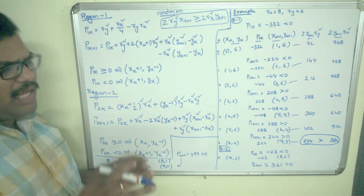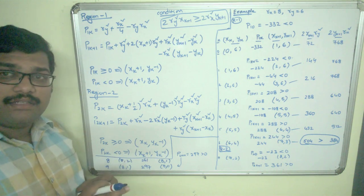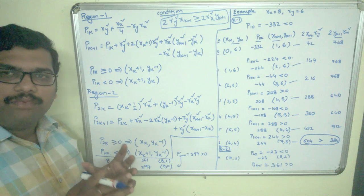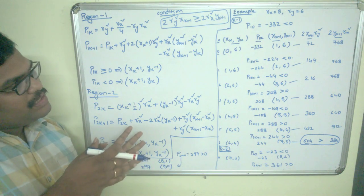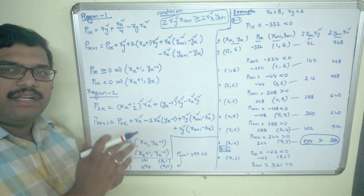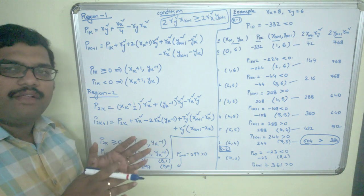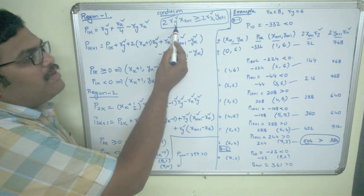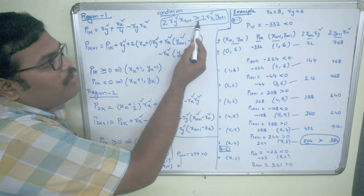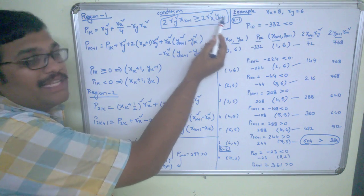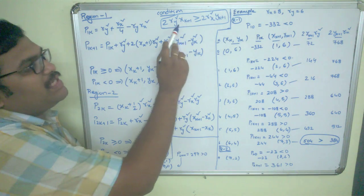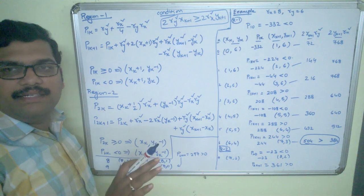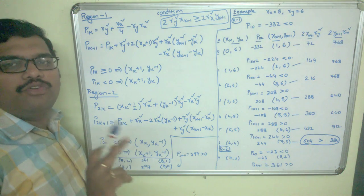In the circle, the condition to stop the octant calculation is x greater than or equal to y. In the ellipse, the condition to shift the region — that is, where to stop region 1 and start region 2 — is: 2·ry²·(xk+1) greater than or equal to 2·rx²·(yk+1). If this condition is satisfied, region 1 ends and region 2 starts at that same point.